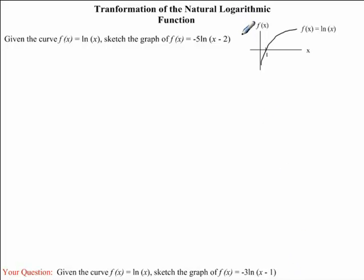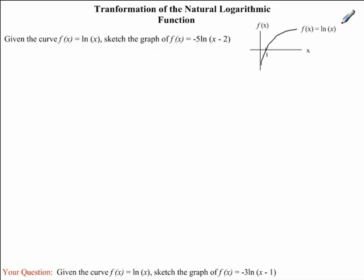Given the curve f of x equal to ln of x, we're asked to sketch the graph of f of x equal to negative 5 ln of x minus 2. If you look at the right-hand side of your screen, we have the graph of the natural logarithmic function, ln x.